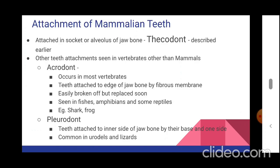Mammalian teeth are attached in the socket or alveolus of the jawbone, and this condition is known as thecodont. We will discuss other teeth attachments seen in vertebrates that are not seen in mammals: acrodont and pleurodont. Acrodont occurs in most vertebrates — teeth are attached to the edge of the jawbone by fibrous membrane and hence easily broken off, but replaced soon. It is seen in fishes, amphibians, and some reptiles, for example shark and frog.